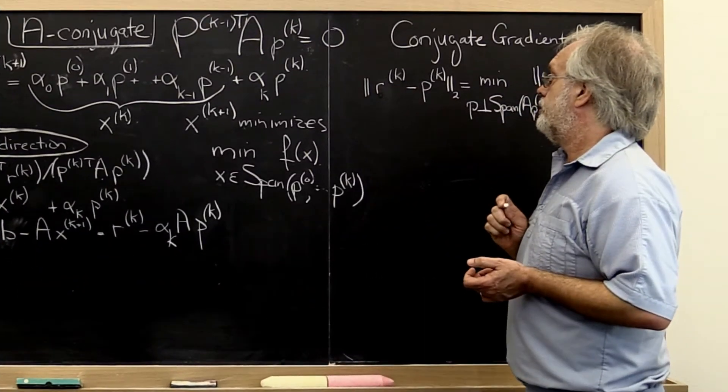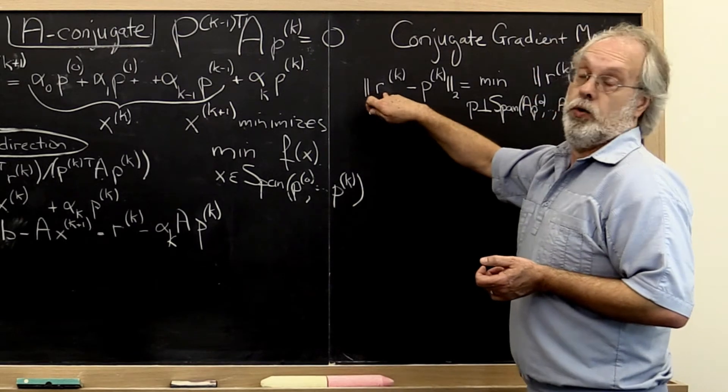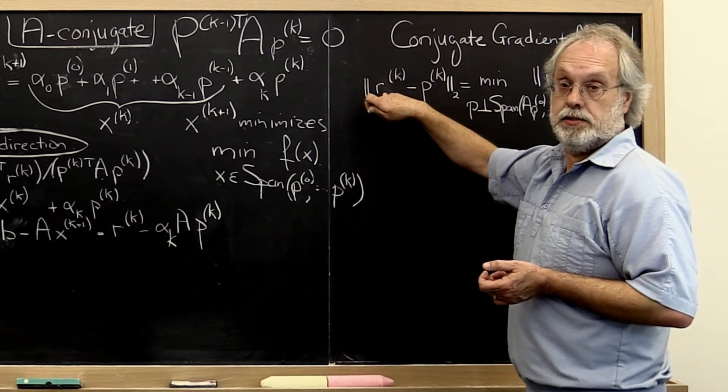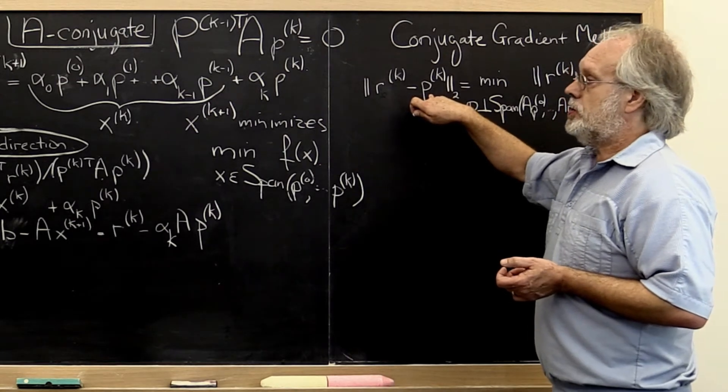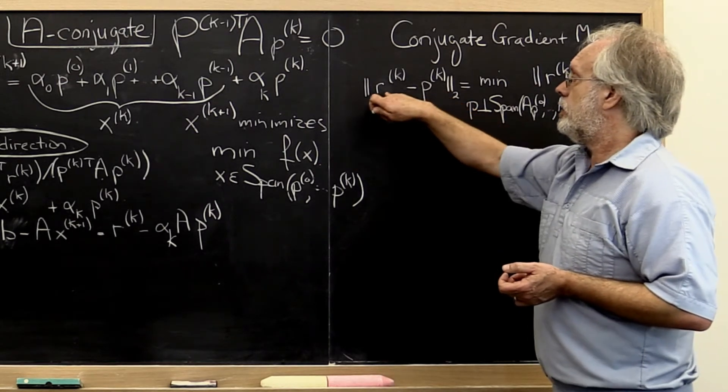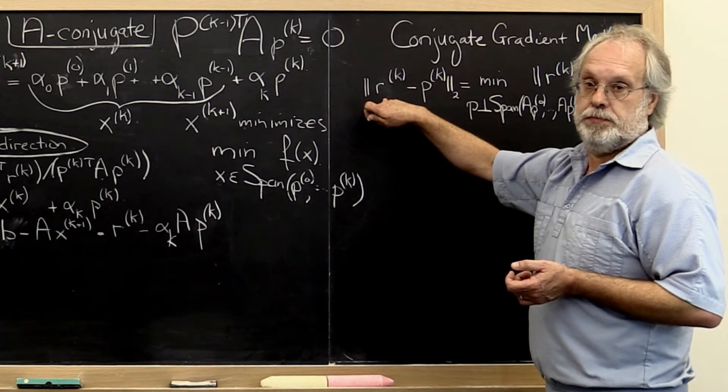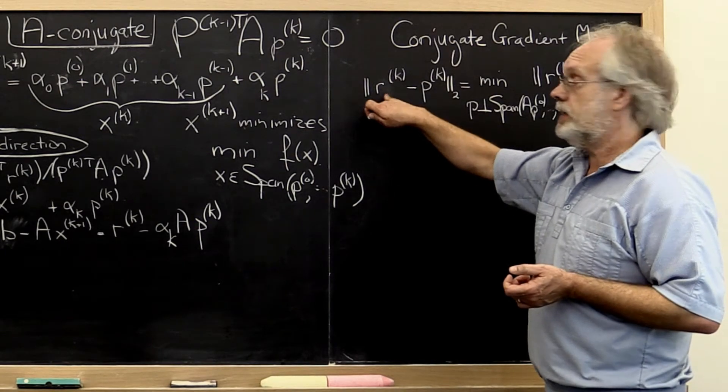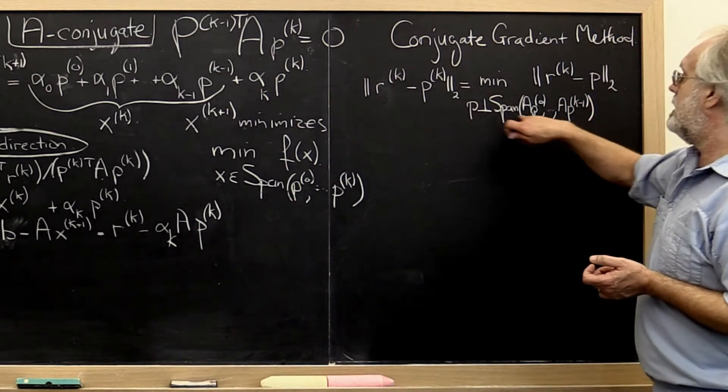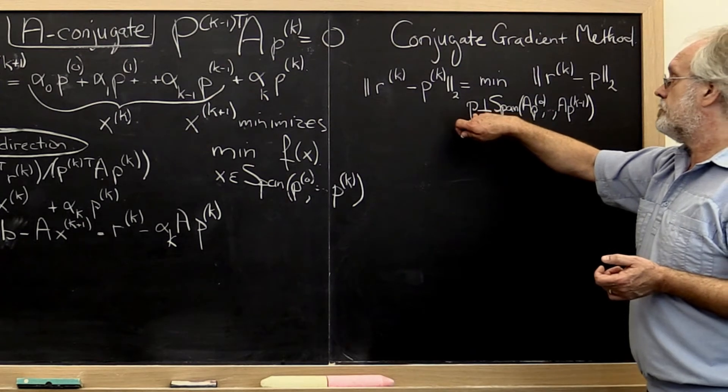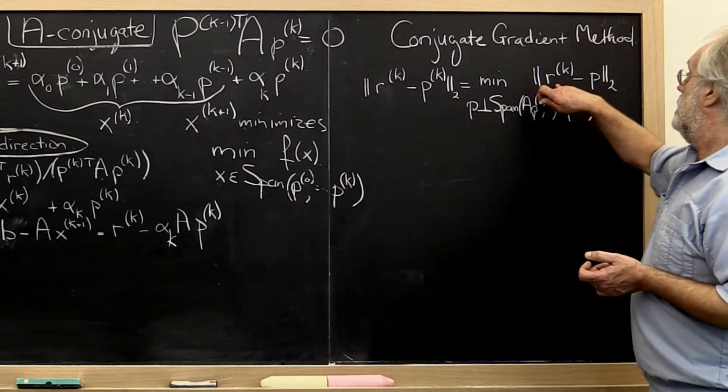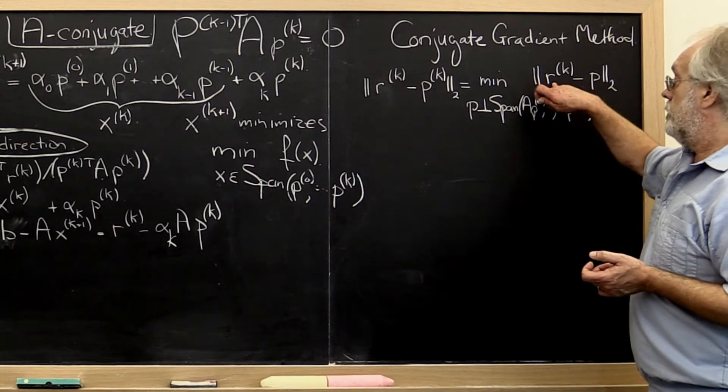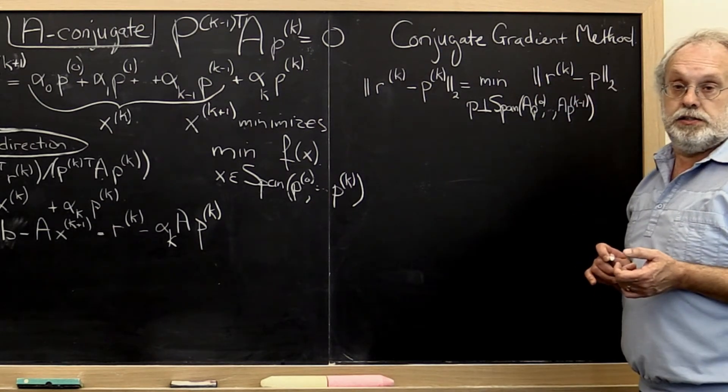So we'd like to go in the direction of steepest descent. Let's instead find the A-conjugate direction that is closest to the direction of steepest descent. In other words, let's minimize over all factors that are A-orthogonal to the previous directions, the two-norm of the residual and those vectors.